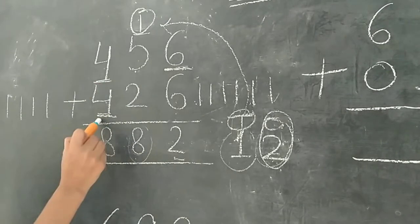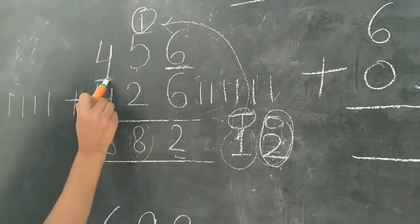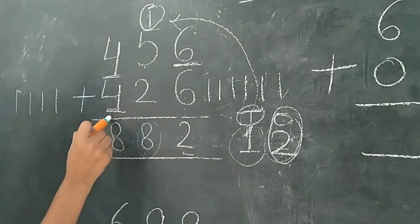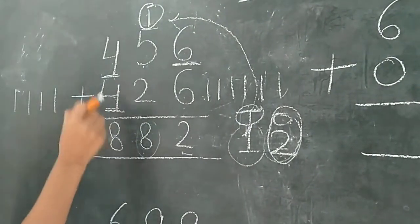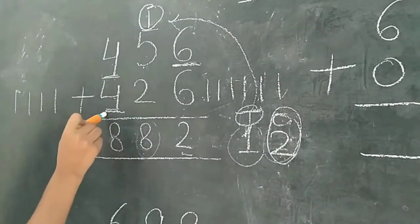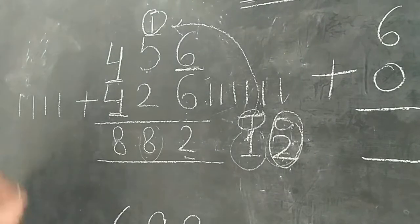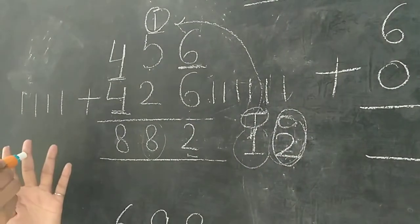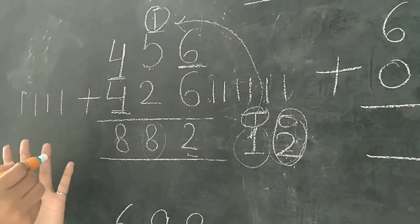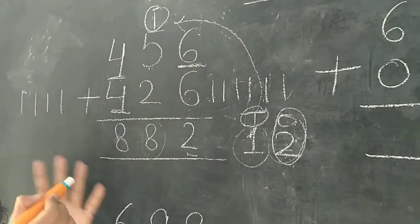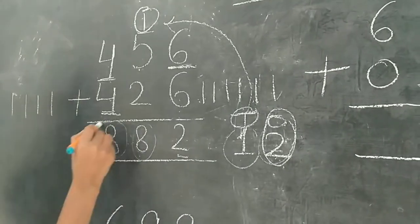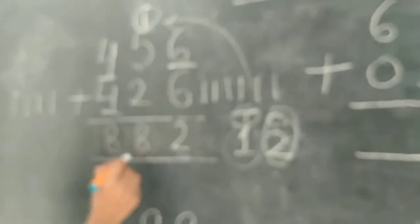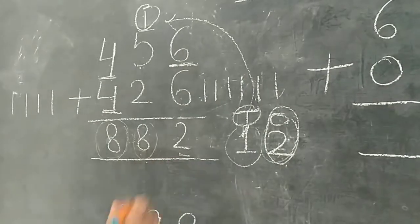Now 4 plus 4. 4 humara pehle se likha hua hai. Ab isme hum 4 aur add karenge. To, aapko 4 ke baad se count karna hai. After 4, we count: 5, 6, 7, 8. Humne yaan kya likha? 8. So the answer is 882.